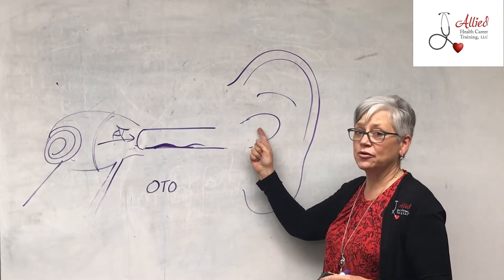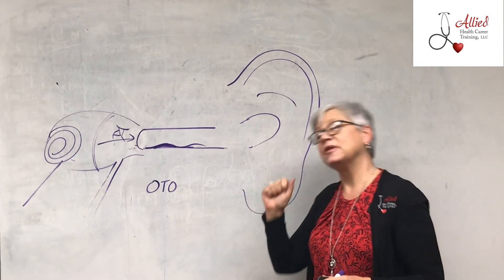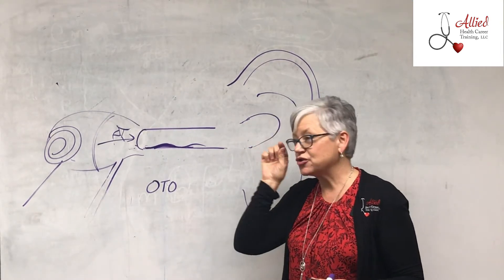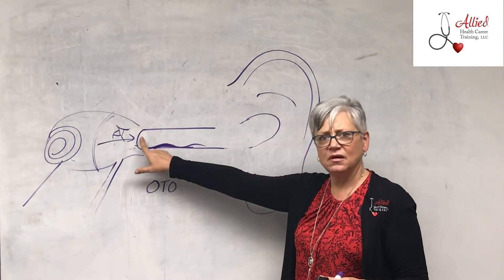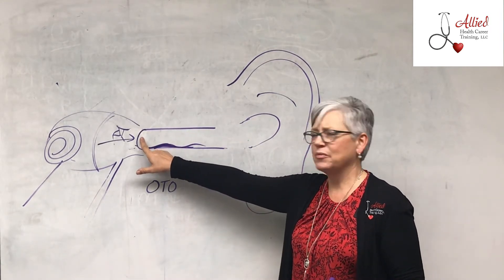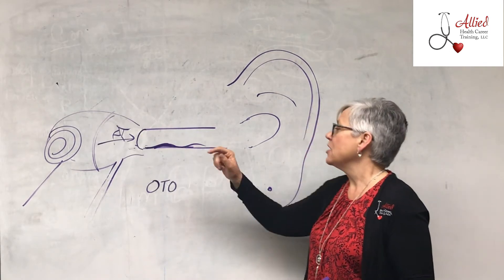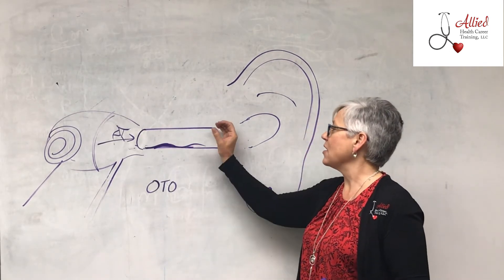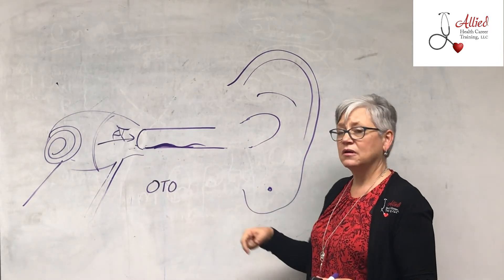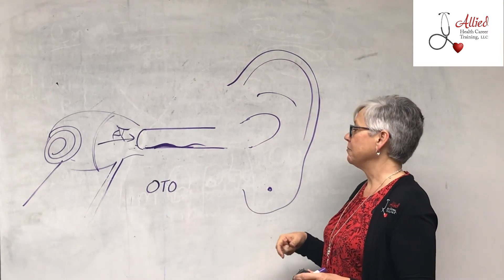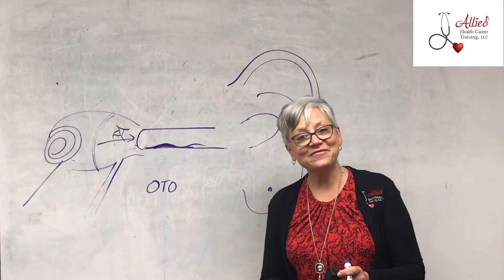When you do ear drops, make sure not to bullseye — that's when you lay down and drop it straight down in, because you don't want to hit the tympanic membrane directly. That would be painful, and it can also cause a bubble. So you want to roll it down the edge of the ear canal instead.